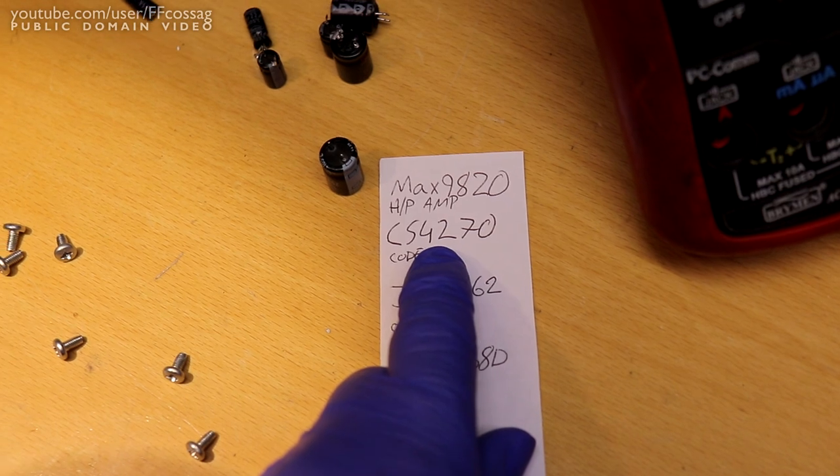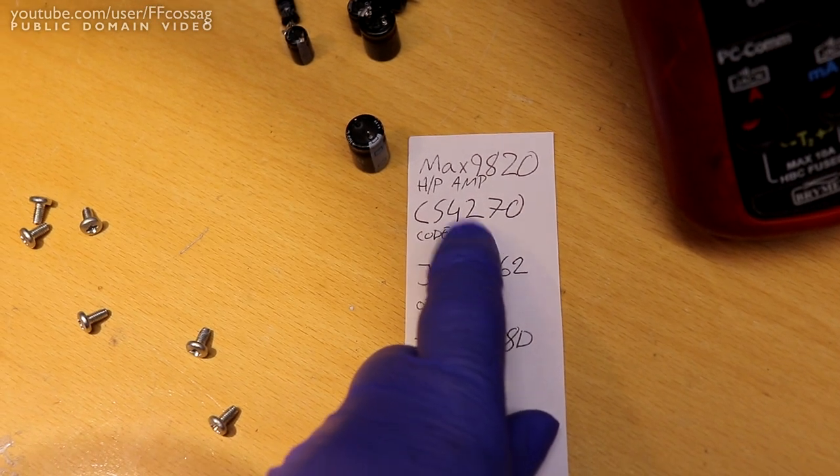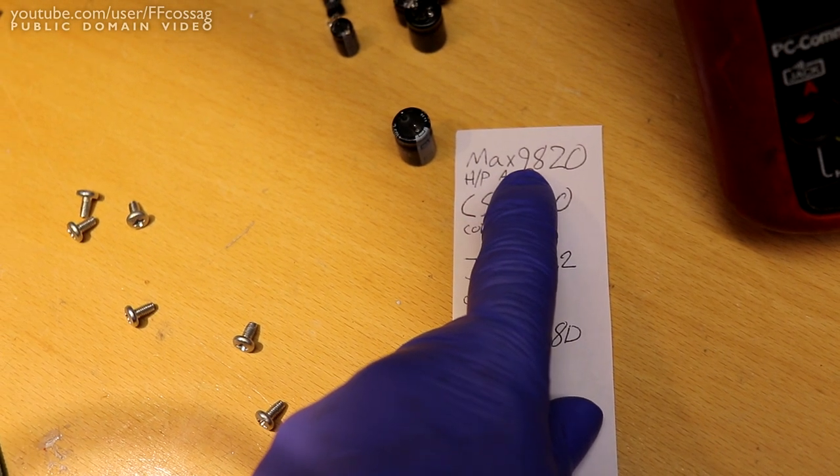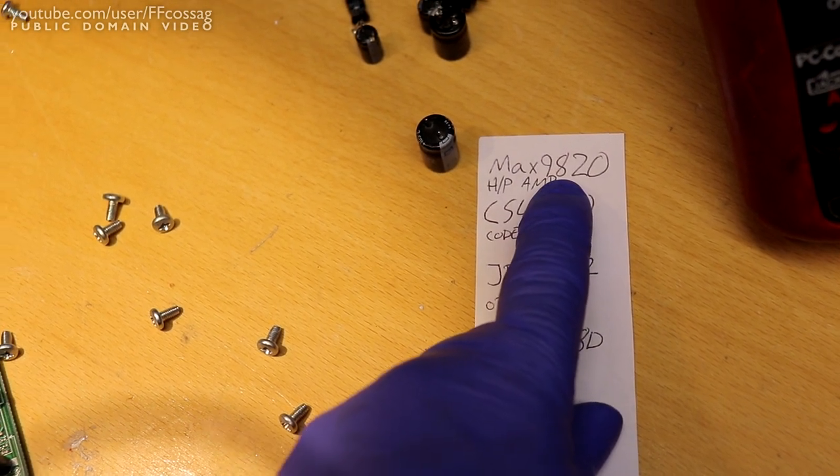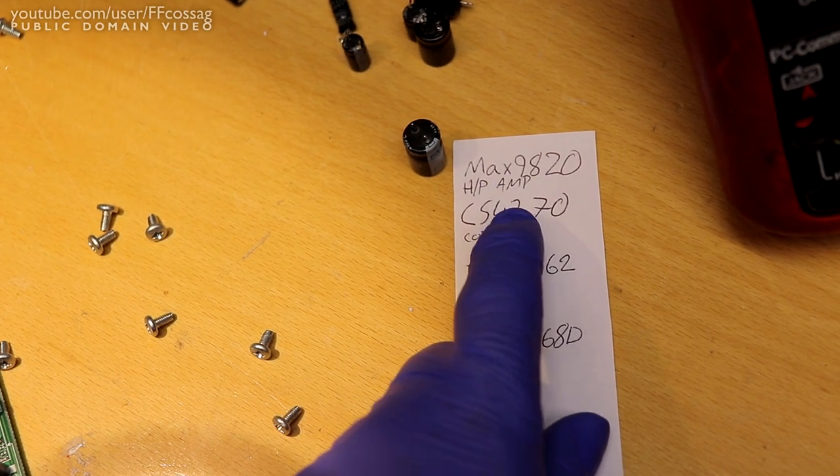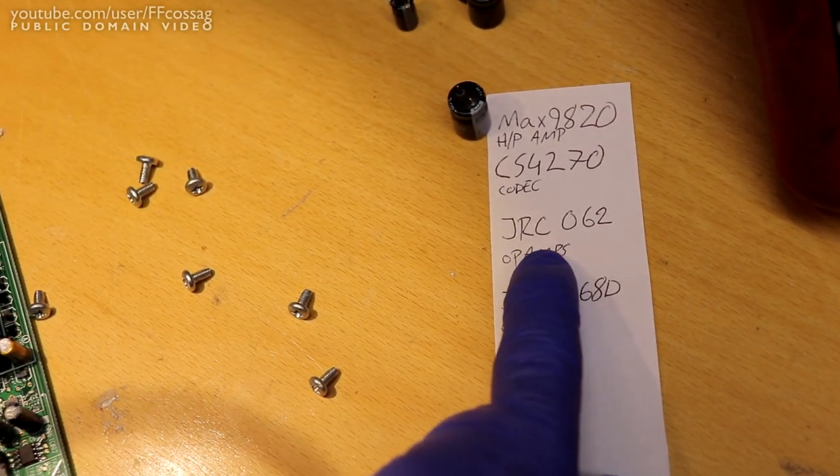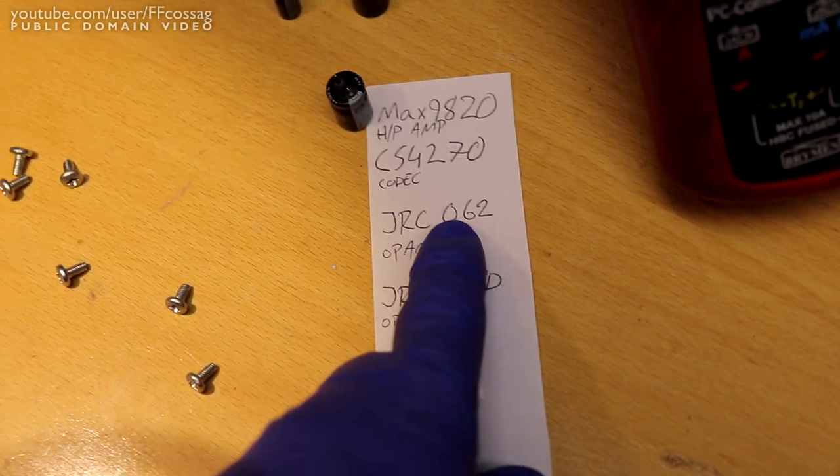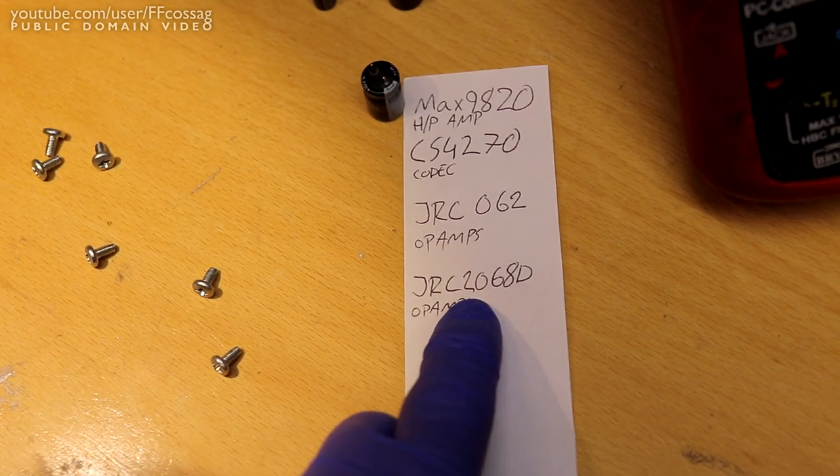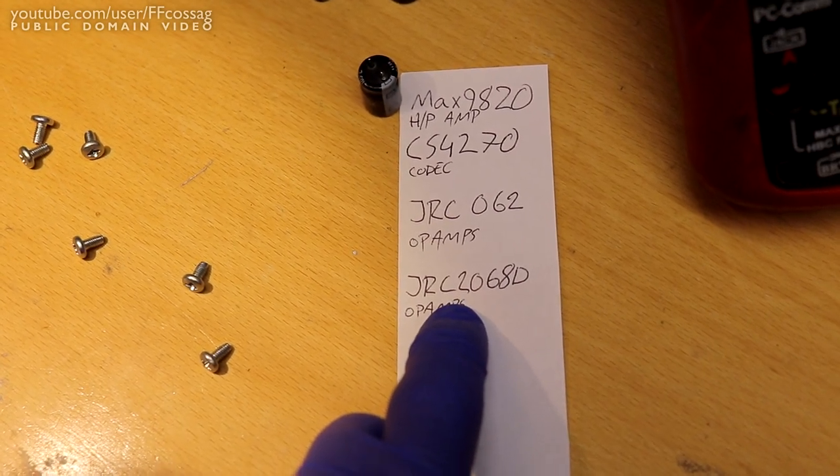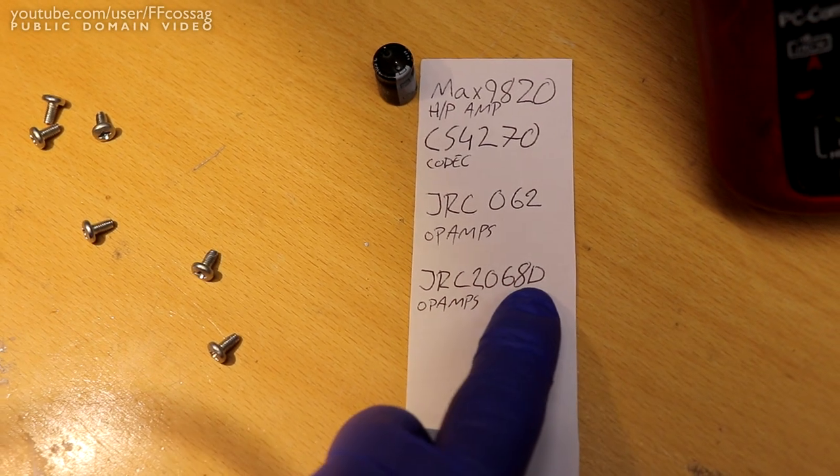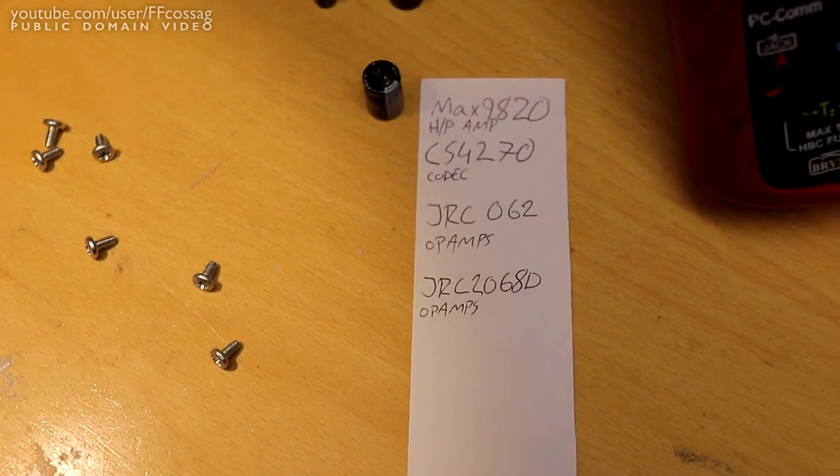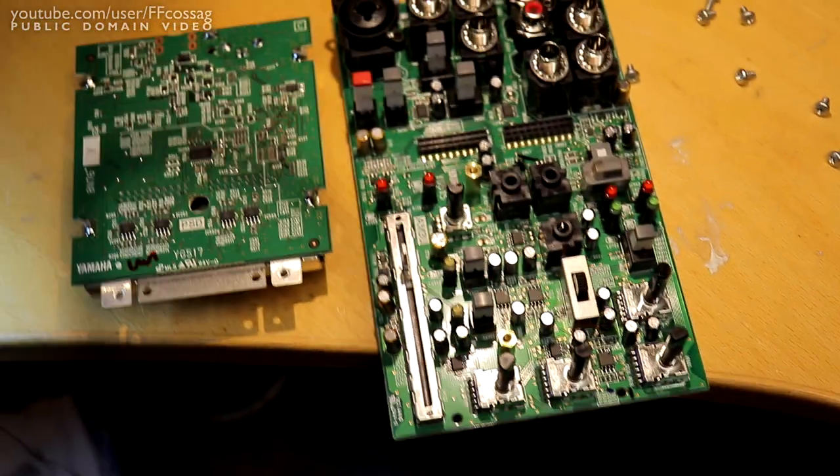The sound chip is a Cirrus Logic CS4270, not particularly impressive. The headphone amp is a MAX9820, difficult to find out because the chip is not labeled well. There are some JRC062 op-amps for seemingly general-purpose applications. Those are not very good. And for the audio stuff, they are using JRC2068Ds. The D class is a bit better than the normal 2068. They're just fine. They're a better 4558.